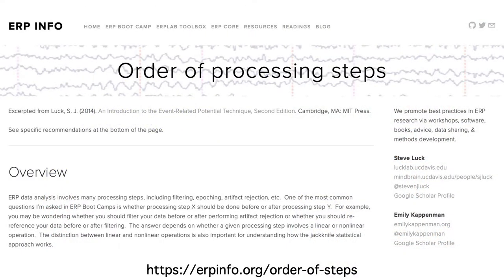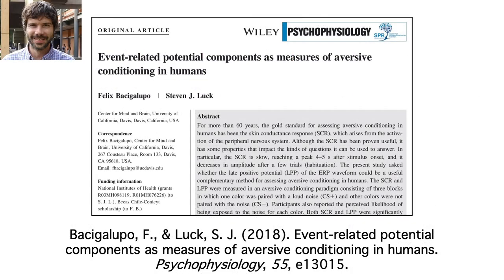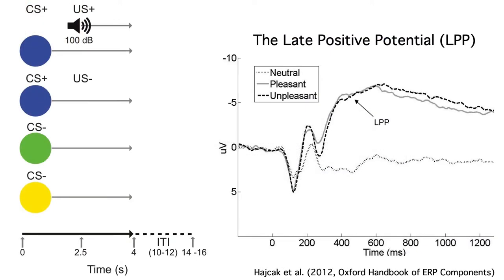Different studies do these steps in different orders. If you want to know more about the order of steps, take a look at this webpage. I'll keep using Felix's aversive conditioning study as an example. To keep things simple, I'll focus on the late positive potential. He also looked at the skin conductance response and a long duration ERP component called the stimulus preceding negativity, but I'll skip those.